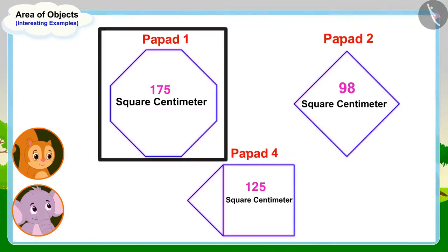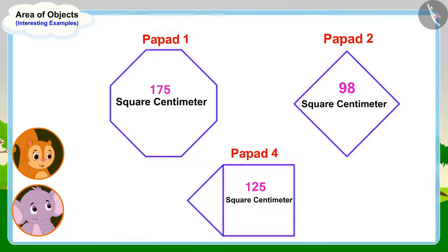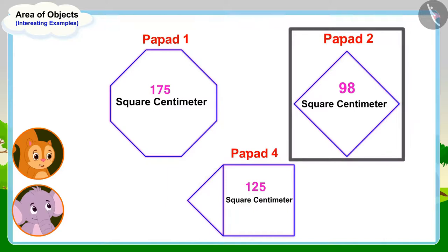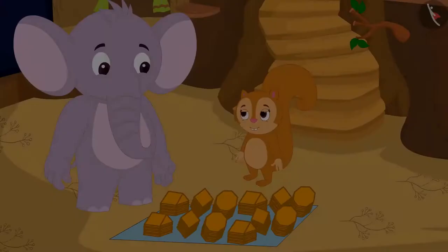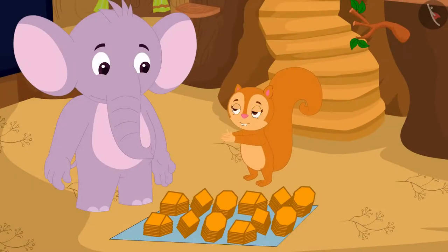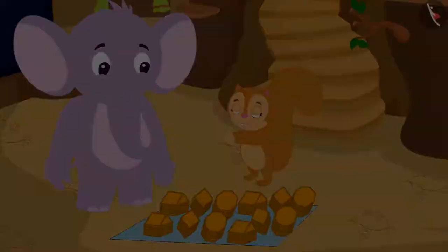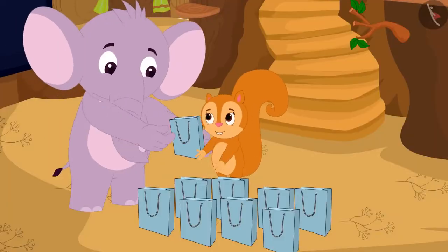Look Appu, first papar has the largest area. It means this papar is the largest. And second papar has the smallest area. It means this papar is the smallest. Chanda excitedly told Appu. Chanda thanked Appu for teaching her about area and then with his help packed all her papars.